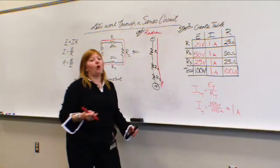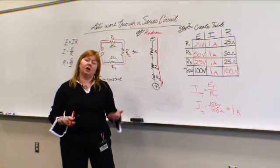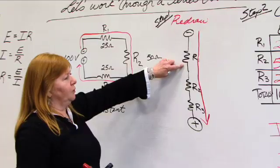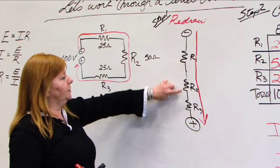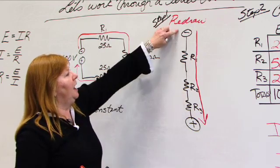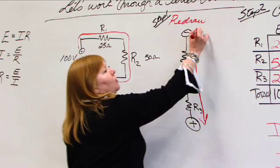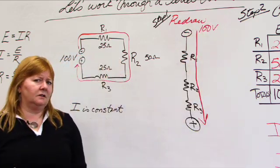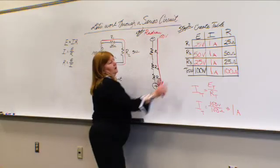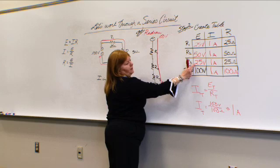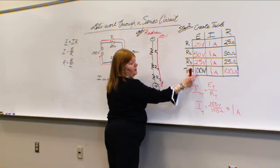And what else do we know about a series circuit? We can start to check our work. We know that the voltage drop over R1 plus the voltage drop over R2 plus the voltage drop over R3 better equal the total voltage, which is 100 volts. So let's check and see if we did this correctly. 25 plus 50 is 75 plus 25 more is a total of 100 volts. Looks good.